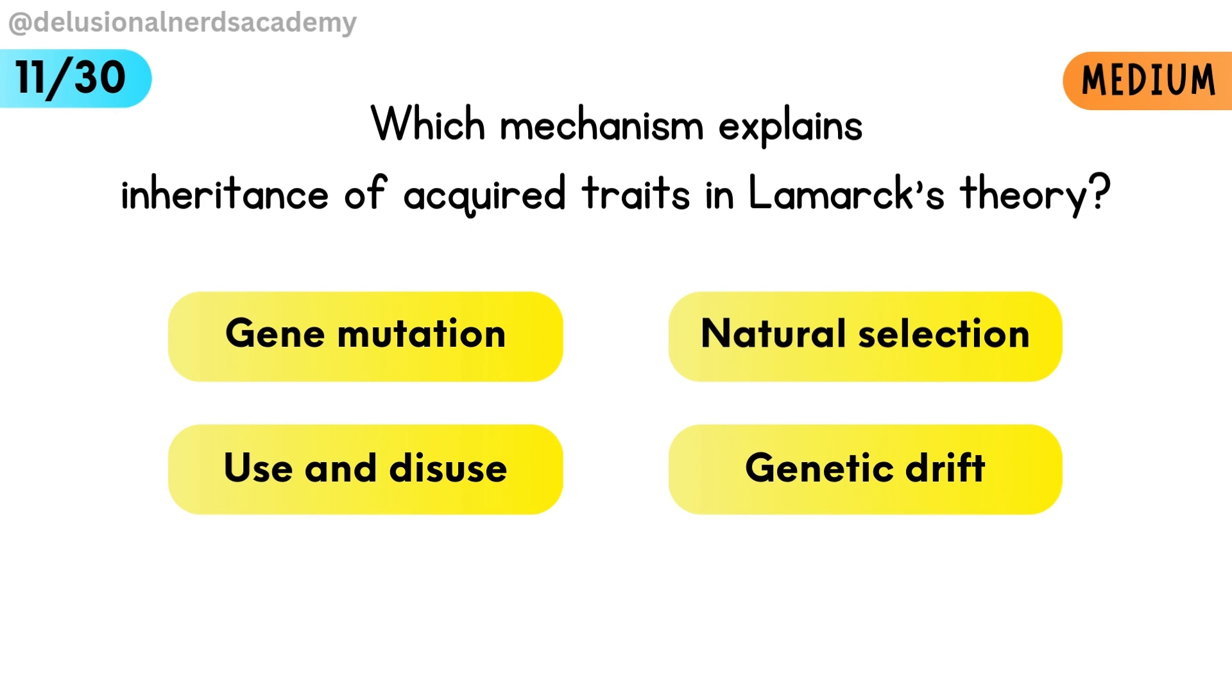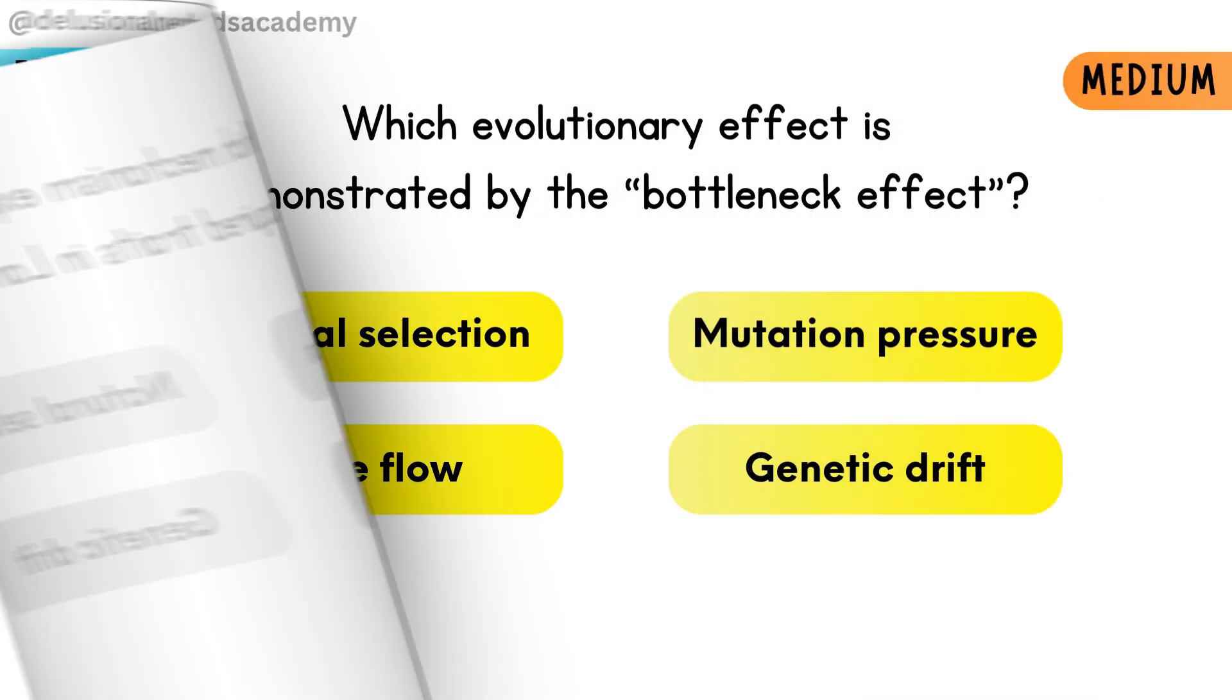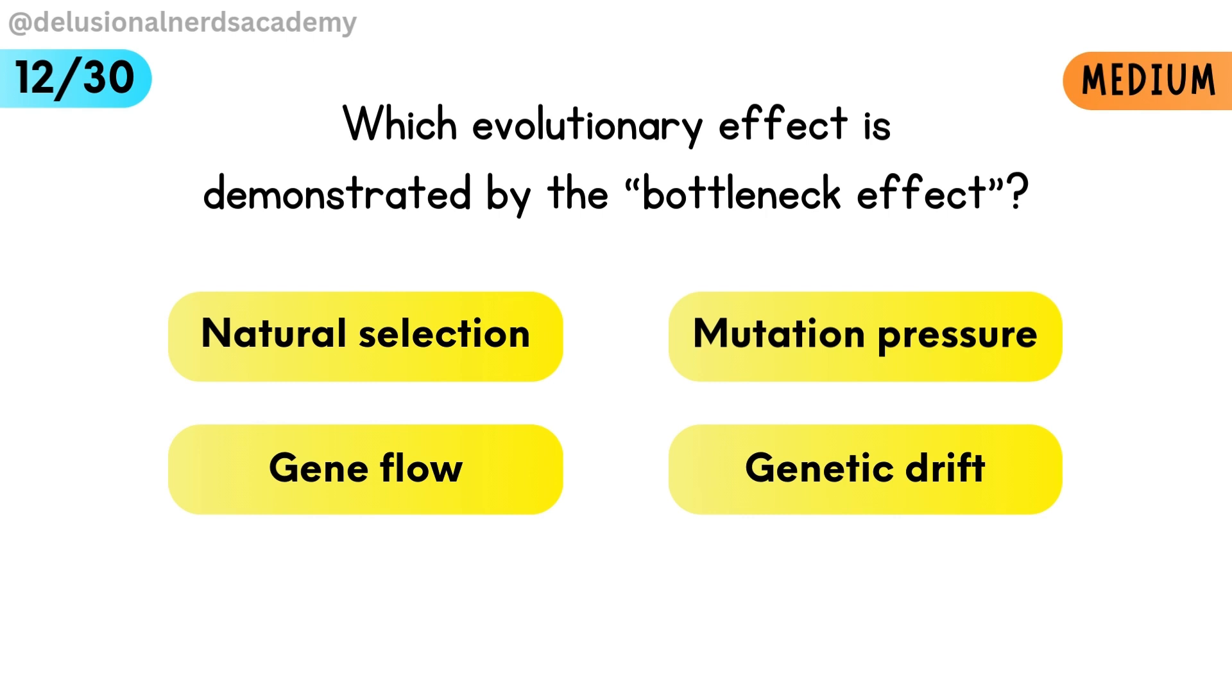Which mechanism explains inheritance of acquired traits in Lamarck's theory? Lamarck explained his theory by use and disuse of organs. Which evolutionary effect is demonstrated by the bottleneck effect? The bottleneck effect is an example of genetic drift.